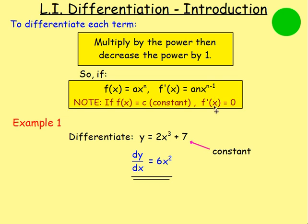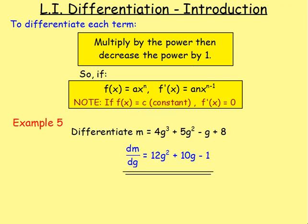How do you differentiate a function? You multiply by the power and then decrease the power by 1. If you are given a constant, such as 7, that can also be written as 7x to the power of 0. Remember, anything to the power of 0 is 1, so it's 7 times 1. If you multiply by the power, you'd have 7 times 0, which gives you 0 — meaning if you differentiate a constant, you always just get 0.